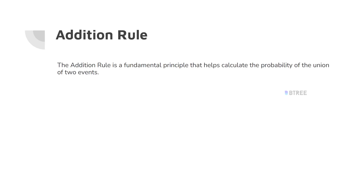First, the Addition Rule. What do we do with the addition rule? There are two events — Event A and Event B — and we calculate the probability of their union. The Addition Rule is the fundamental principle that helps calculate the probability of the union of two events.